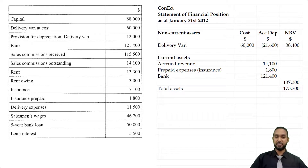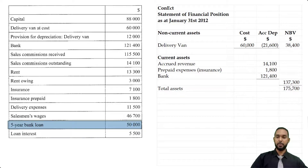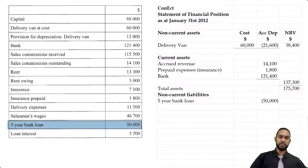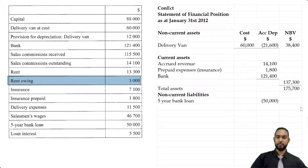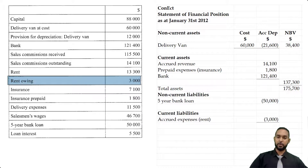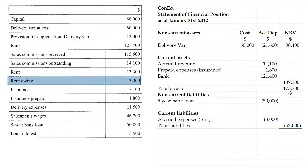Now let's take a look at the liabilities. We had a non-current liability — a five-year bank loan of 50,000 — so we put that in under non-current liabilities. And there was one current liability: an accrued expense of rent. Total liabilities is the sum of the non-current and current liabilities — 50,000 plus 3,000 gives us 53,000 — which we subtract from our total assets, giving us a net asset value of 122,700.